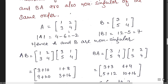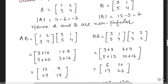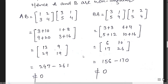Suppose matrix A has determinant 4 minus 6, which is minus 2, and matrix B has determinant 12 minus 5, which is 7. Here A and B are non-singular because their determinants are not equal to 0. Computing AB — multiplying the matrices — gives a non-zero determinant, and BA also gives a non-zero result. Note that AB is not equal to BA in general.